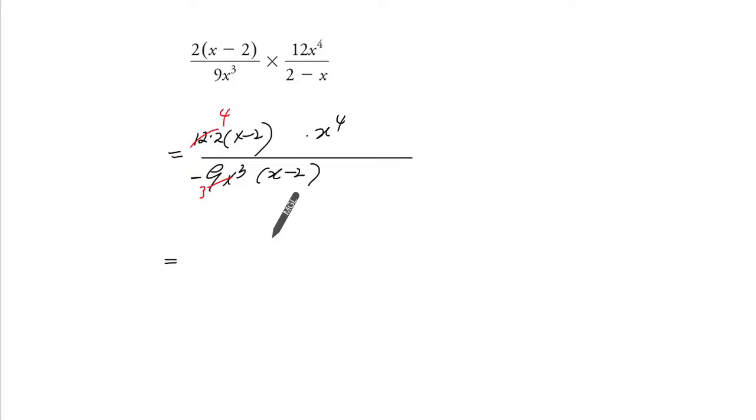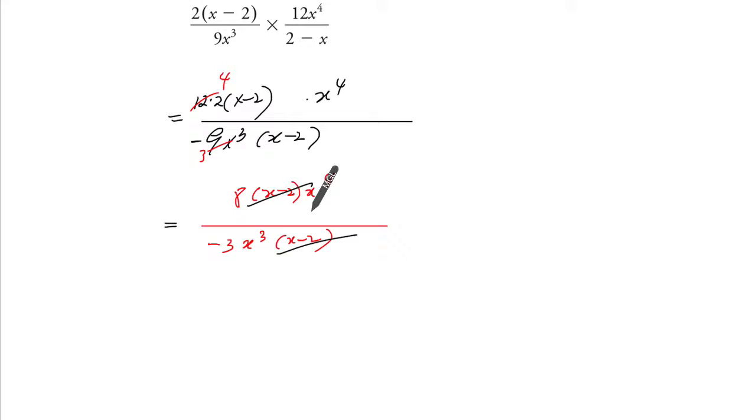So your 4 times 2 is 8, x minus 2, x to the power of 4, all over minus 3x cubed times x minus 2. That gets reduced, and this gets reduced to give you 1.